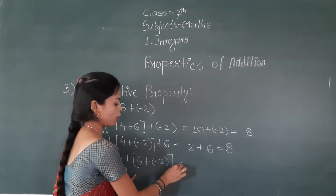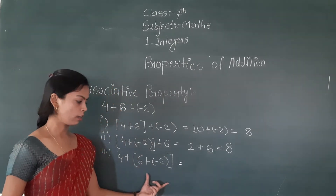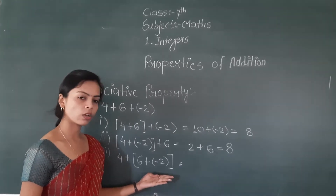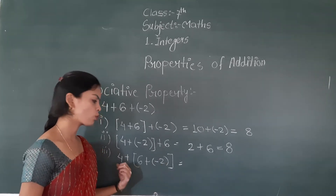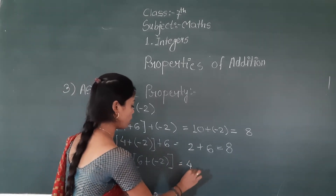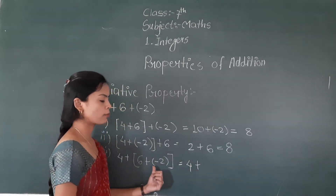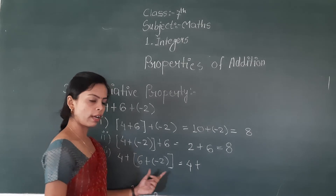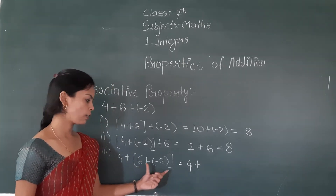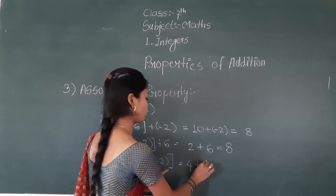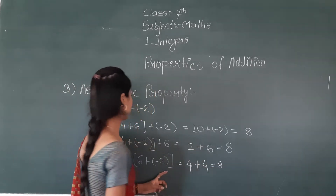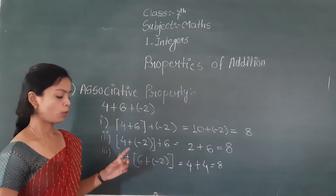For the third way, we first solve the bracket: six plus minus two. One is positive and one is negative, so six minus two equals four. Then four plus four equals eight. So the answer is eight.